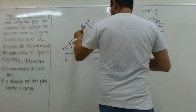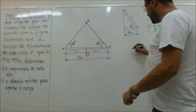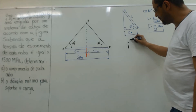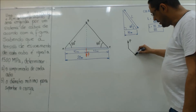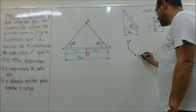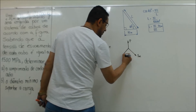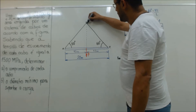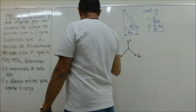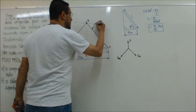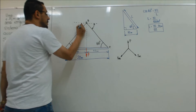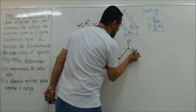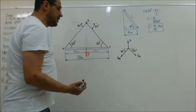Agora vamos calcular o esforço nos cabos. Como eles têm o mesmo ângulo, vou desenhar as forças agora. A força vai ser levada para cima, que é o ponto B. Aqui eu vou ter a minha tração no cabo BC e aqui a minha tração no cabo TAB (ou TBA). Pela regra dos ângulos alternos internos, quer dizer que aqui eu vou ter 60 graus e aqui também 60 graus.